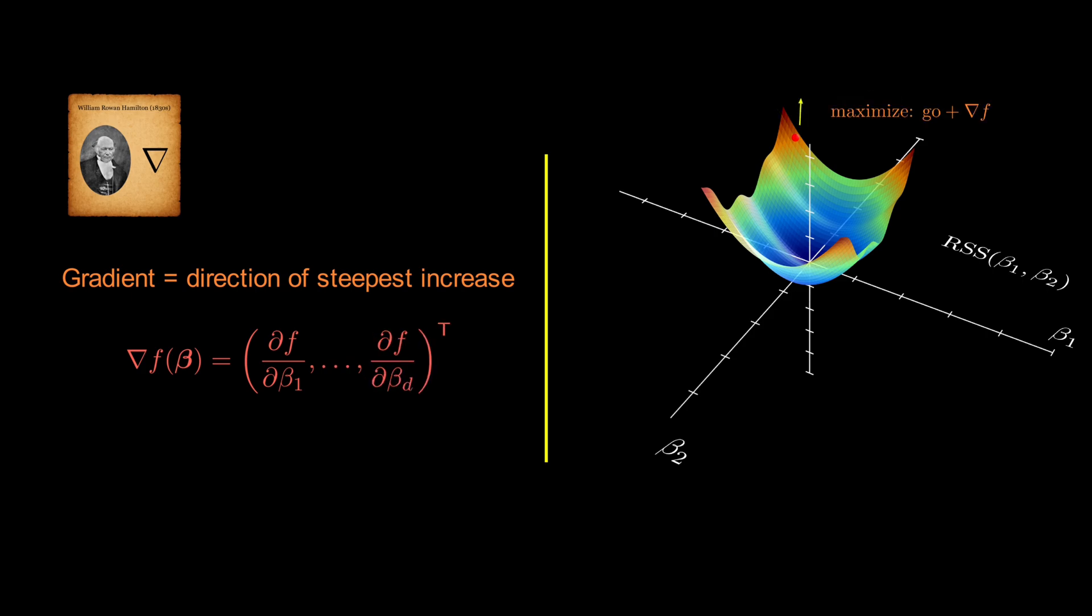If we want to maximize a function, we move in the direction of the gradient. If we want to minimize it, we go in the opposite direction.